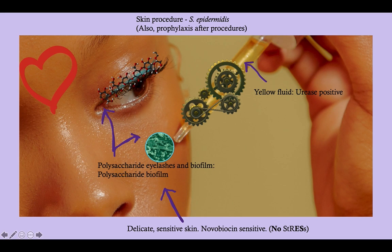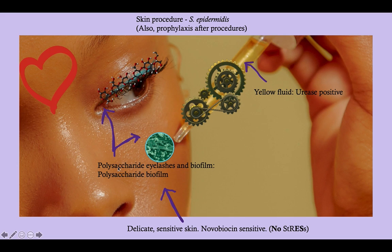We also see a polysaccharide eyelash here and a biofilm — they're kind of out of place. But if you can just remember this picture: notice her polysaccharide eyelash and the biofilm right next to where she's injecting. That means a polysaccharide biofilm.